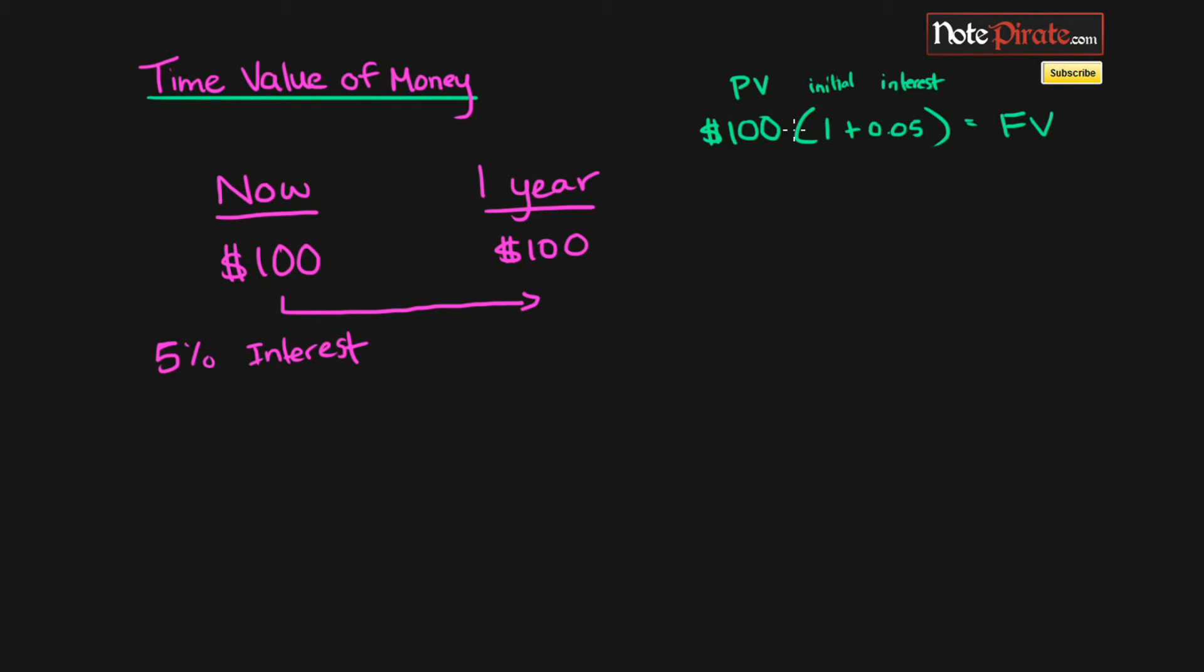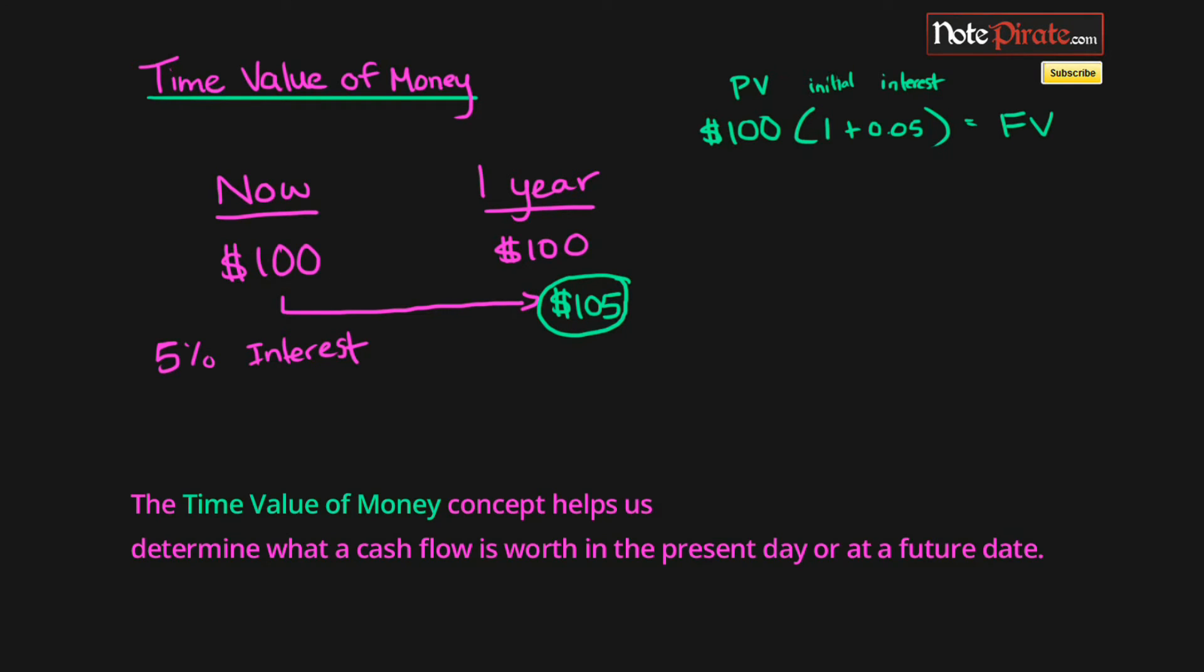Together, that's going to give us our future value so we can compare apples to apples. Multiplying 100 by 1.05 is going to yield $105. Now that we can compare apples to apples, we can see that this is the bigger apple and we're going to choose the $100 in the present day.